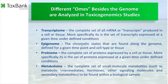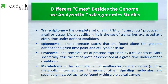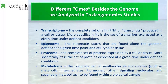Different omics besides the genome are analyzed in toxicogenomic studies. The transcriptome at the RNA level is paving the way for much of the other omics studies within toxicogenomics. Also listed here is the epigenome — a chromatin state that regulates transcriptomes. We also have the proteome and the metabolome. Within Toxbank, we have interest in integrating various types of omics analysis, and that is actively ongoing.